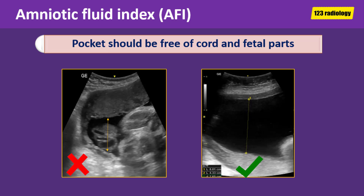There are some pitfalls you should avoid during amniotic fluid index measurement. The first one is to ensure you measure an amniotic fluid pocket that is free of umbilical cord and fetal parts. On the image on the right side of the screen, the measurement is incorrect because the pocket contains a loop of the umbilical cord. On the image on the left side of the screen, the measurement is correct because the pocket is free of cord and fetal parts.